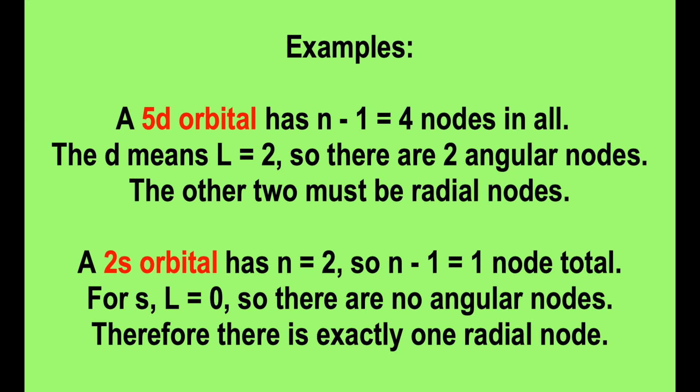A 2s orbital has n equals 2, so one node in all. For s, L equals 0, so there are no angular nodes, so the only node is radial.